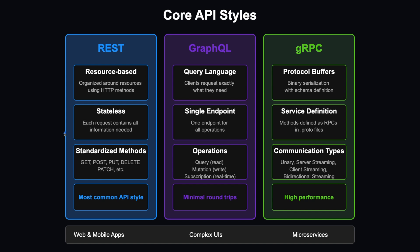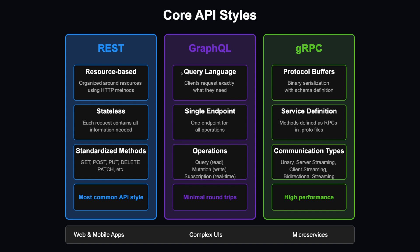Based on its characteristics, REST is most commonly used in web and mobile applications. GraphQL is the second most common API style after REST. It is a query language that allows clients to request exactly what they need, using a single endpoint for all operations. You specify what you expect to receive by providing a payload in the request.